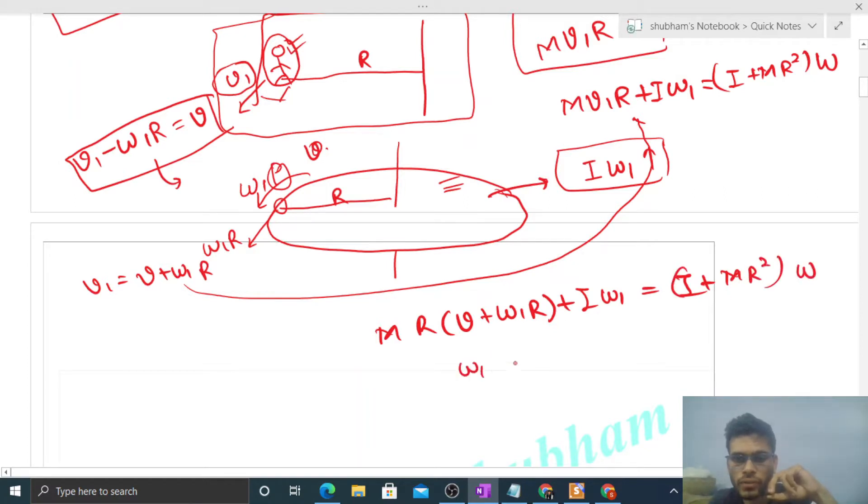From here, the value of omega 1 is: (I plus MR square) into omega minus M into R into v, divided by (I plus MR square).